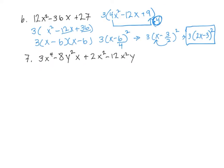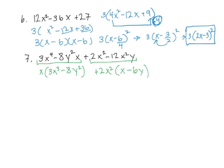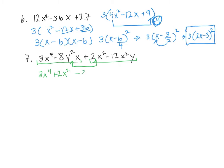Question 7, this is a tricky one. We have 4 terms, so let's just start out by grouping 2 to 2 and see what happens. If I group 2 to 2, I'm left with x times 3x cubed minus 8y squared. On the second one, it looks like I can factor out a 2x squared, which leaves me with x minus 6y. So this is not the right grouping. I'm going to rearrange these terms and see if I can get a grouping to work, switching the two middle terms: 3x to the 4th plus 2x squared minus 8y squared x minus 12x squared y.